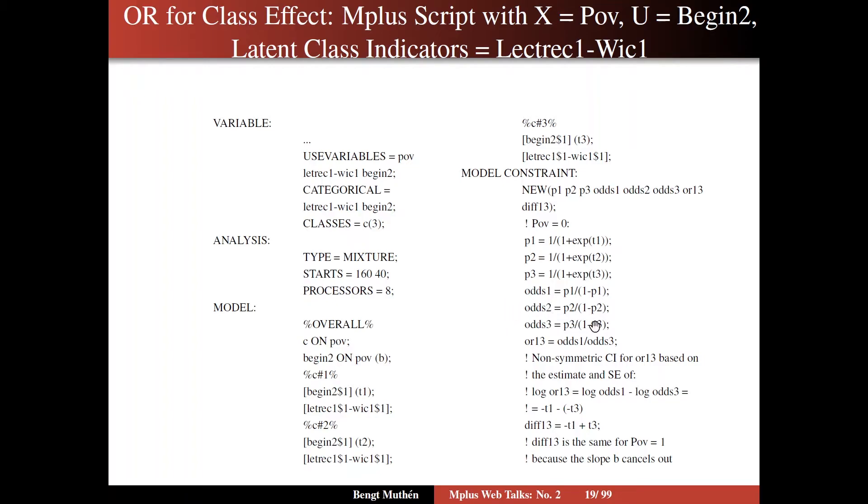We're interested in the relationship between the classes of C and the binary outcome of begin 2. So we're looking at the odds ratio of the ratio of odds being in the first class relative to the odds of being in the last class. That's an odds ratio that tells us the relationship between the latent class variable and the distal outcome. We want a non-symmetric confidence interval for this odds ratio. We base that on the estimate and the standard error of the log of the odds ratio, namely the log odds 1 minus the log odds 3.